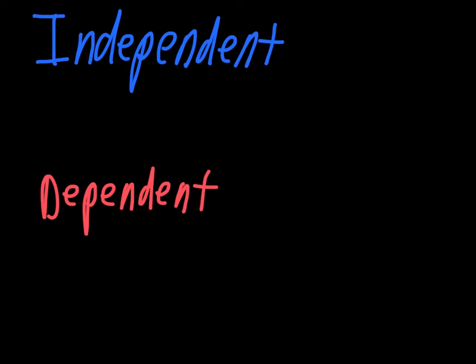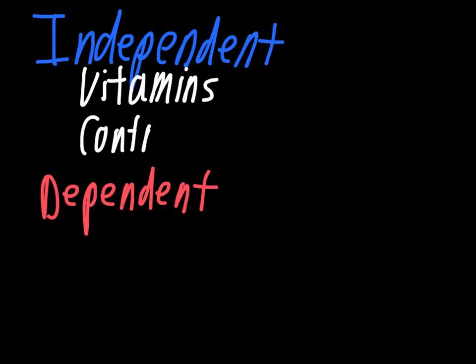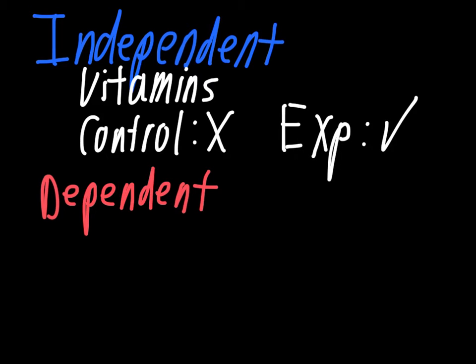So our independent variable in this case is the vitamins. And what we're going to look at are two groups. We either have the control group, where they are not getting any vitamins, or our experimental group, where they are getting the vitamins.